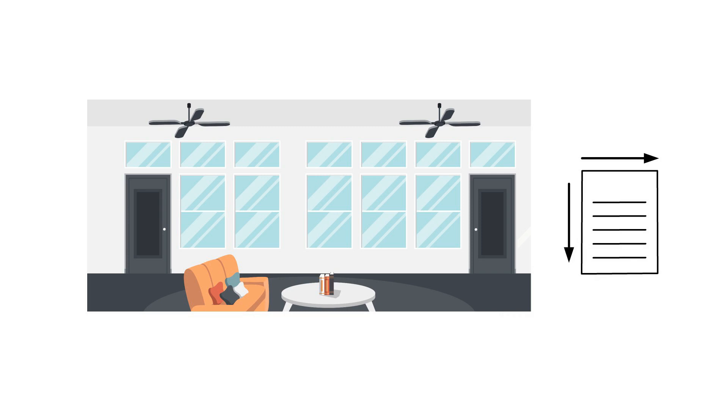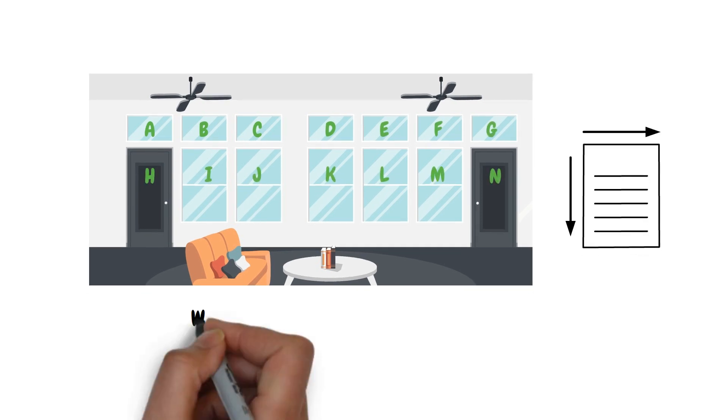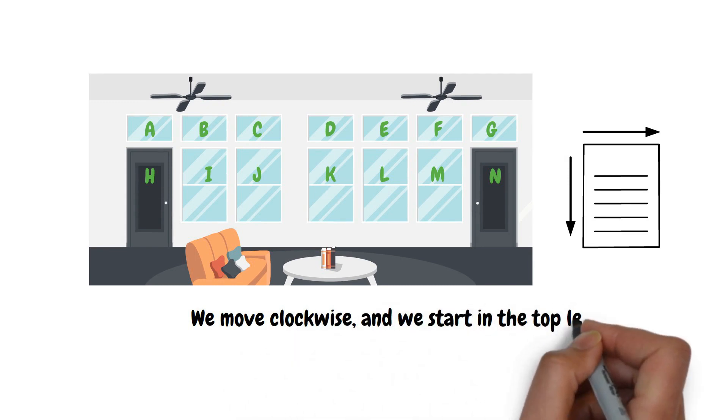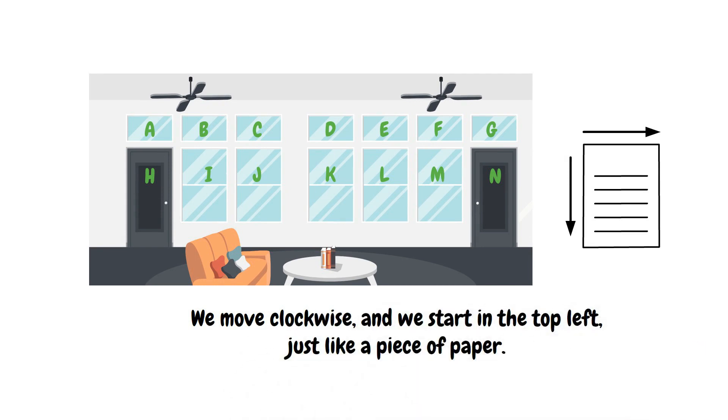So when I look at this, I would start in my top left. This would be window A. And then I would start counting down A, B, C, and going left to right all the way across. Combining our two rules, we move clockwise and we start in the top left, just like a piece of paper.